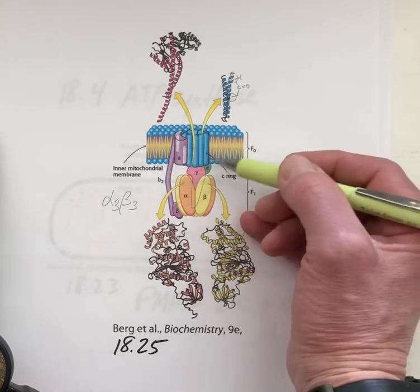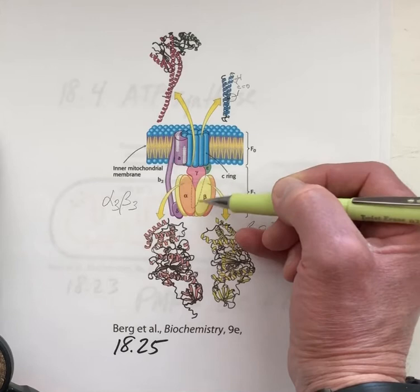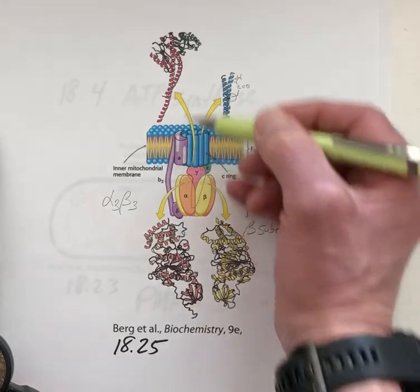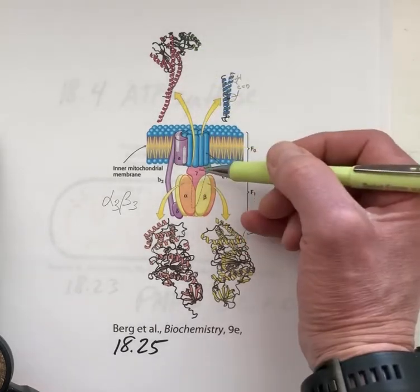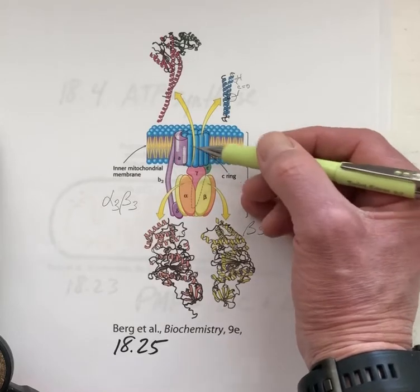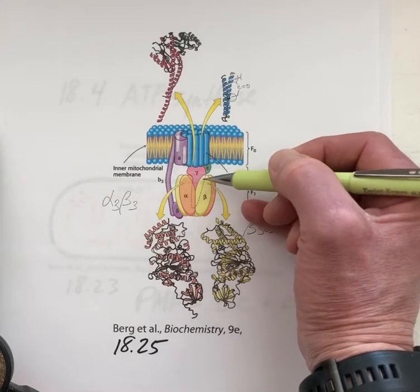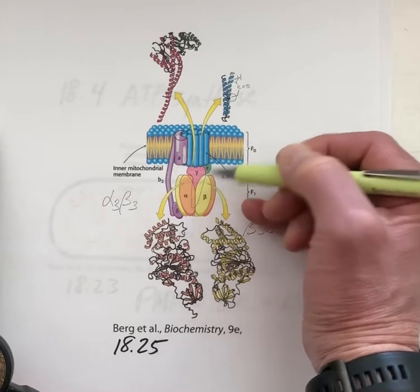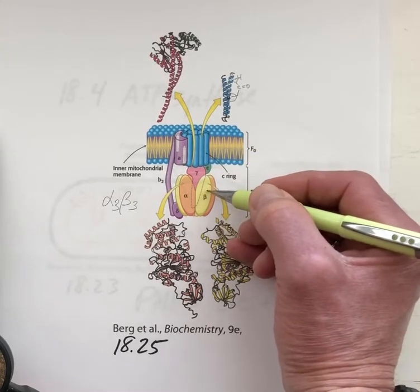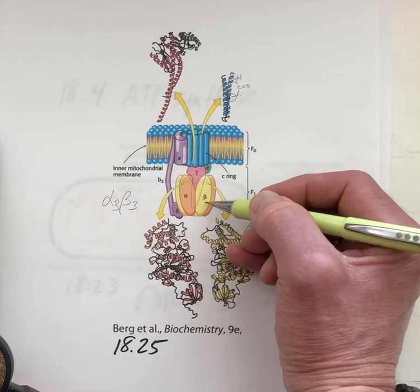The C ring is attached to the gamma subunit, this rose-colored object. We know the structure of that entity as well, and that is turning as a consequence of C ring rotation. As it does this turning motion, it interacts differently with the catalytic subunits, which are the beta subunits.